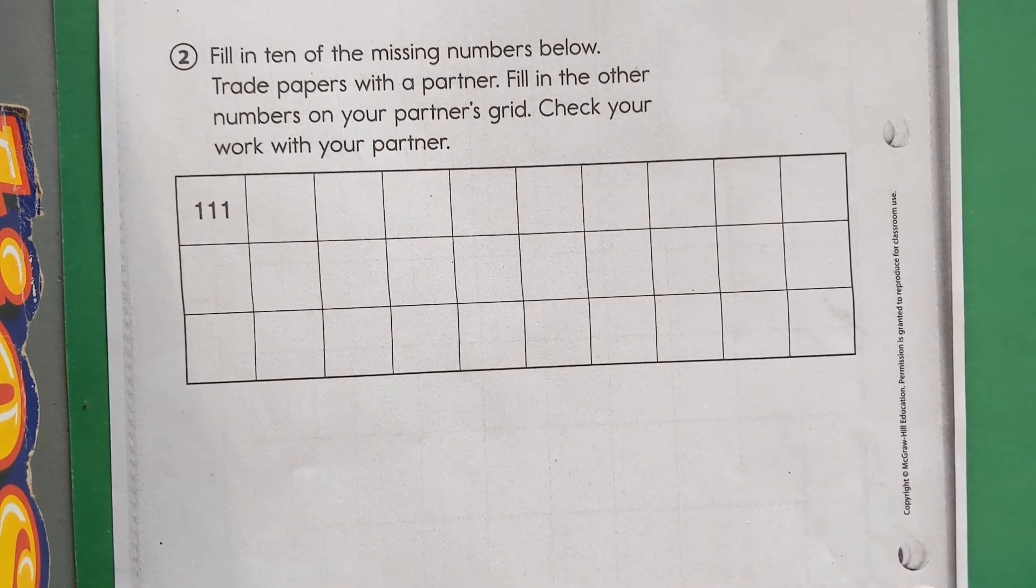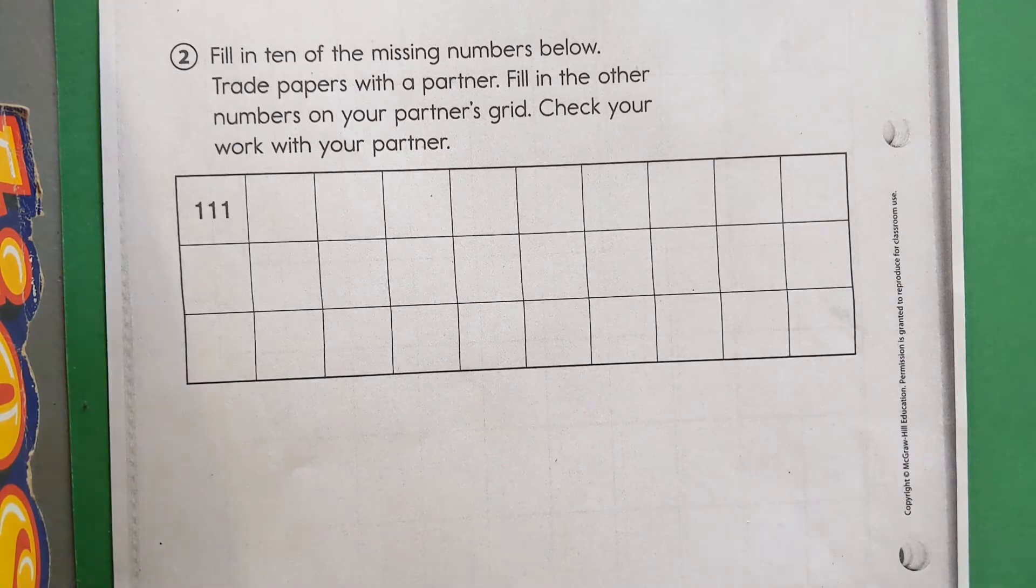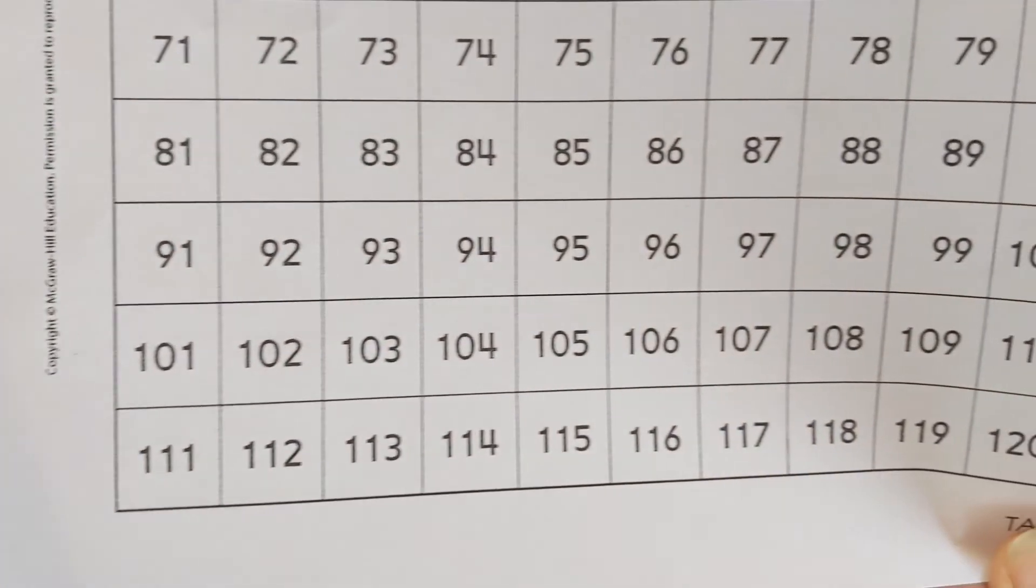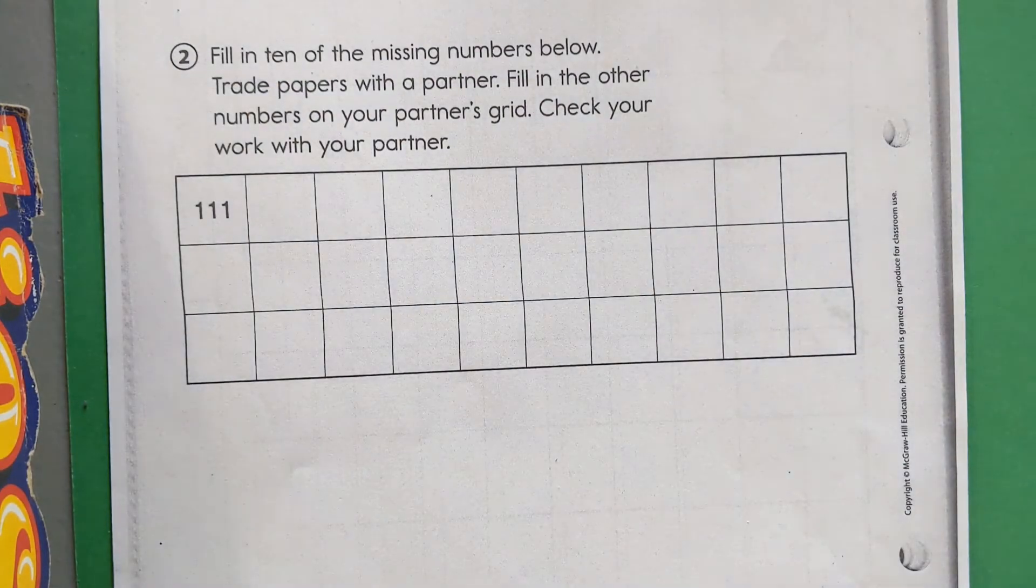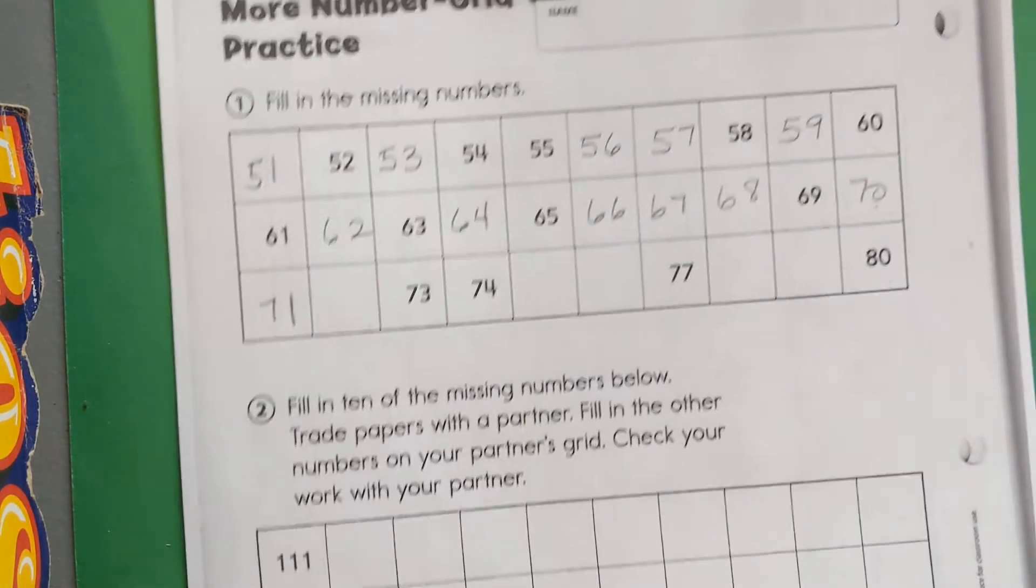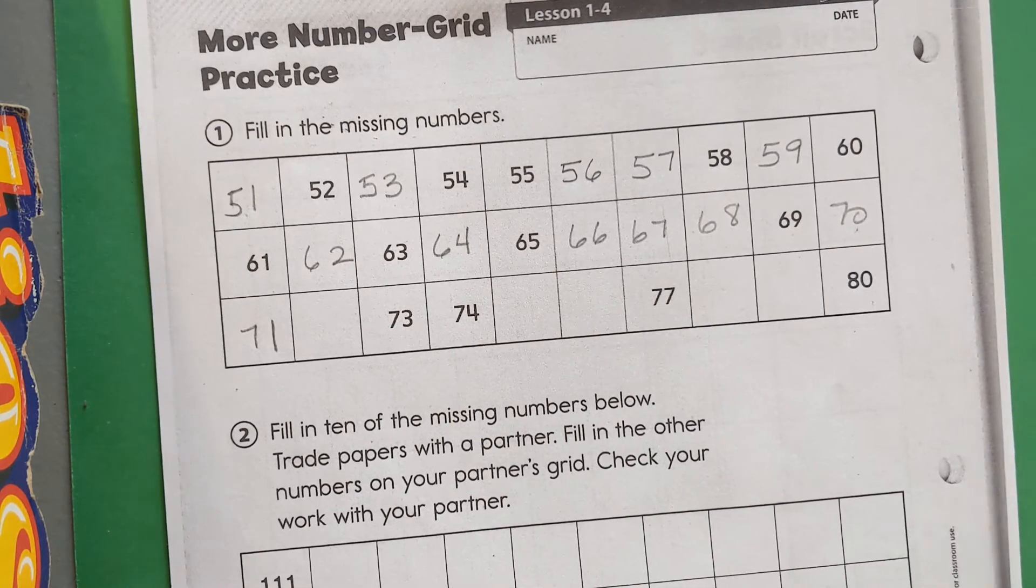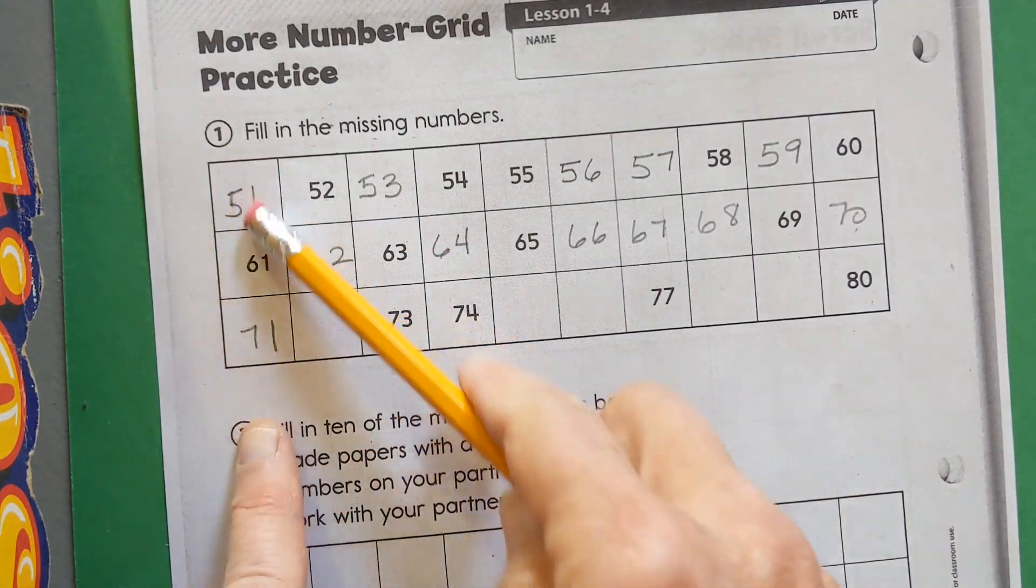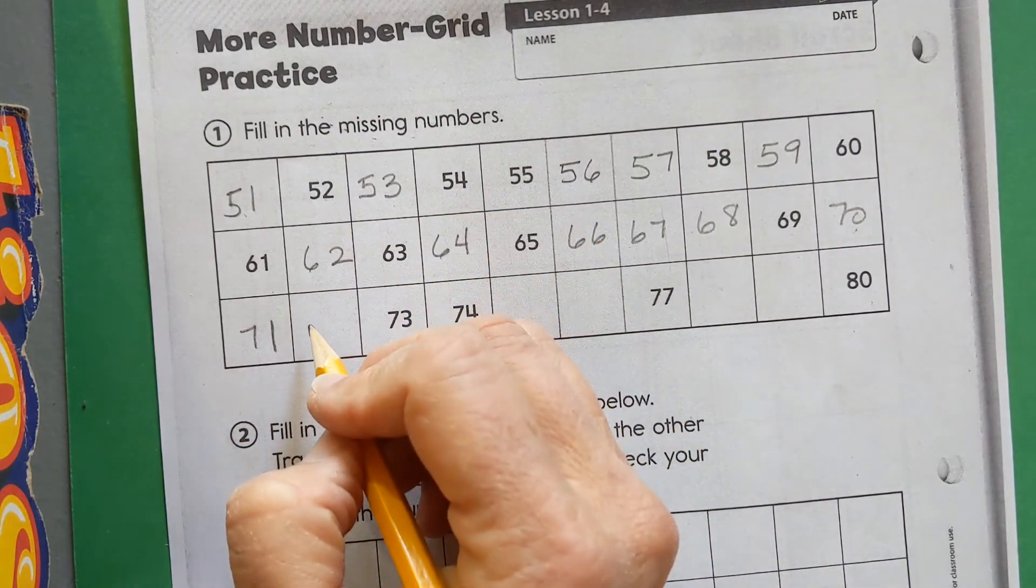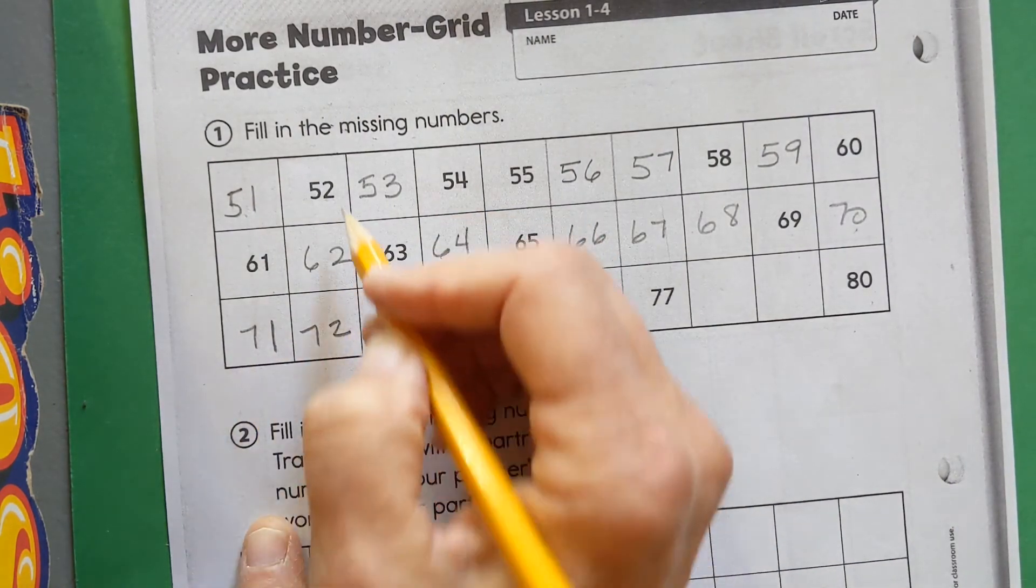Once again you can look at your number grid, but this number grid only goes to the bottom row is 111 and then you're on your own after that. But what did we just remember from the top? We have some clues if we're filling in a number grid. All the same column is going to have ones in it, all the same column is going to have twos. I wouldn't have to even count. I just know 52, 62, 72, it's actually counting by tens.